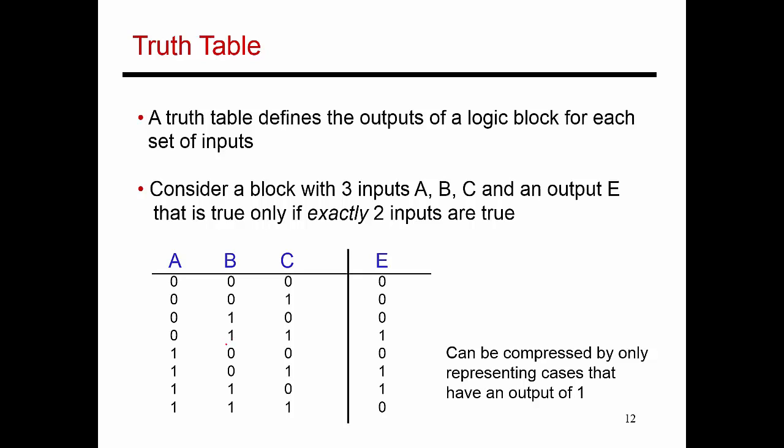Here's an example where two of the inputs are true or high, and exactly two. The third one is low and two of them are high. In that case, my output is 1.